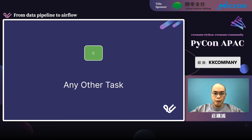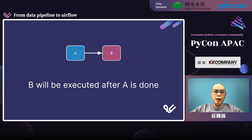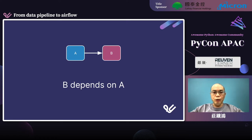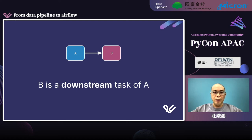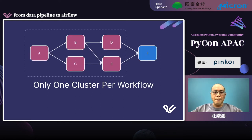If task A is connected to task B with an arrow line, task B will be executed after task A is done. It also means task B depends on task A. Task A is an upstream task of task B, and task B is a downstream task of task A. We provision only one cluster in each workflow, so all cluster tasks of a workflow are executed on the same cluster.